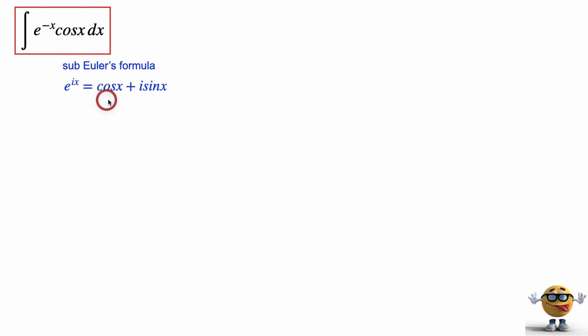Cos of x is the real part of e to the ix. So if we substitute that in, what we're going to solve for is the real part of the integral of